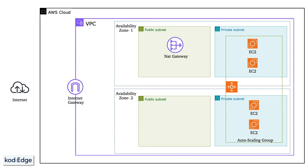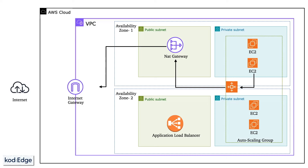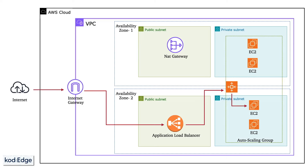Once that is done, we will create an Application Load Balancer in the public subnet, making it accessible from the internet. It will efficiently distribute incoming requests to the EC2 instances within the Auto Scaling Group. If an EC2 instance needs to install dependencies or grab updates, it will use the NAT Gateway for secure internet access. From the outside world, users access the application through the Internet Gateway, which forwards requests to the ALB, which then distributes the workload among EC2 instances.